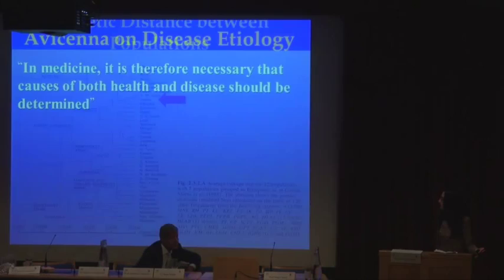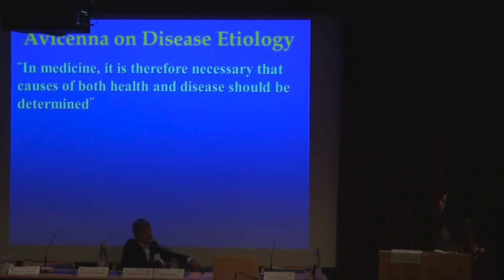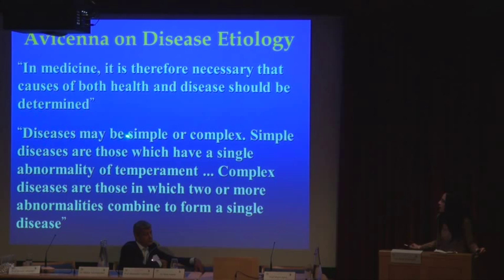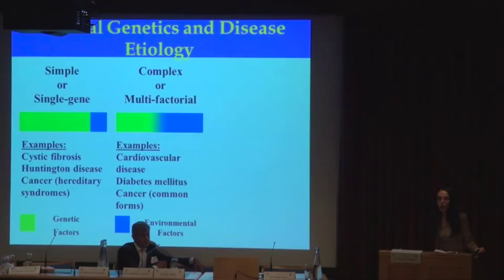Avicenna emphasized the importance of determining the etiology or cause of disease and classified diseases into simple versus complex. Simple diseases, he stated, are those which have a single abnormality of temperament. Complex diseases are those in which two or more components combine to form the disease. In medical genetics, we classify diseases into simple or single-gene disorders and complex or multifactorial disorders.